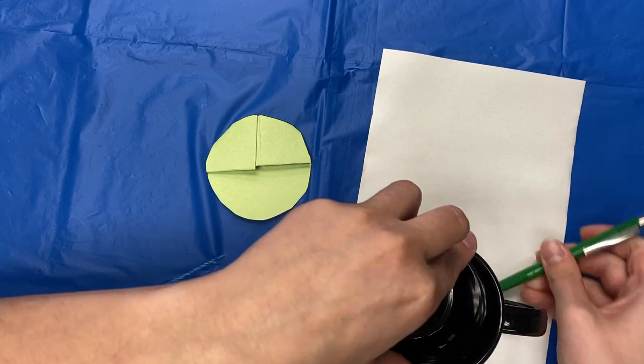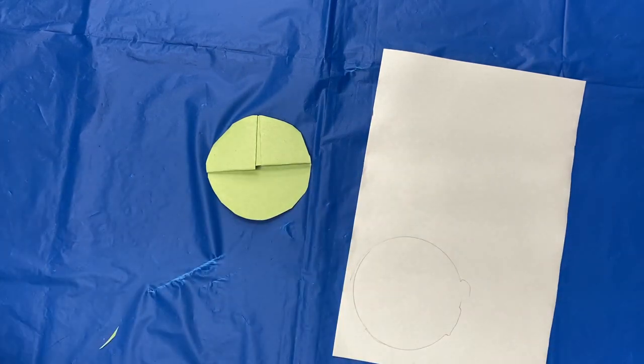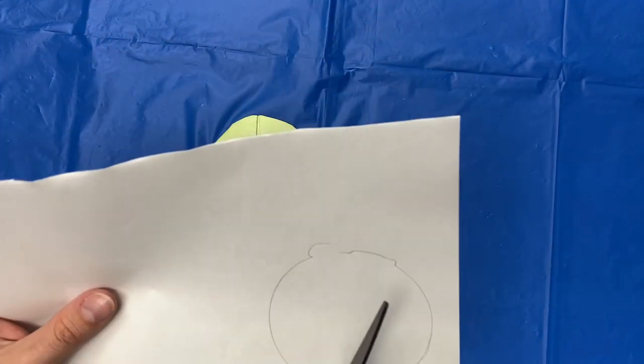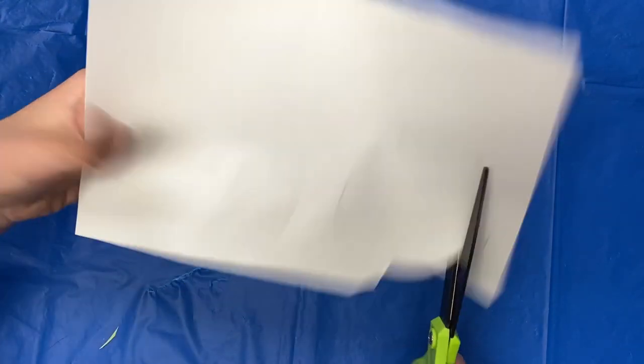Next, cut a circle out of your white paper that is slightly smaller than the green circle.